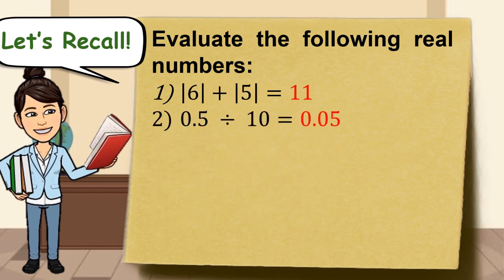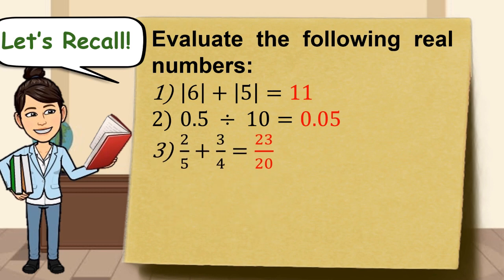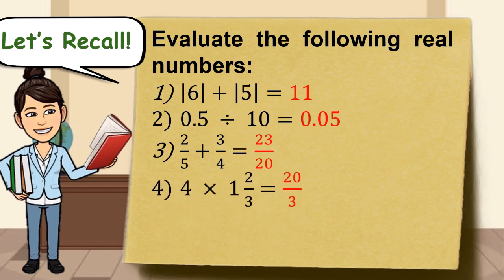Number 2, 0.5 divided by 10 is 0.05. Number 3, 2 over 5 plus 3 over 4 is equal to 23 over 20. Number 4, 4 times 1 and 2 thirds is equal to 20 over 3. Number 5, 1 half minus 1 thirds is equal to 1 over 6.